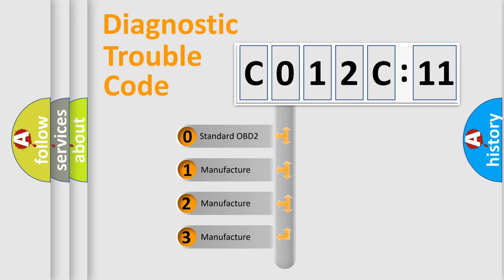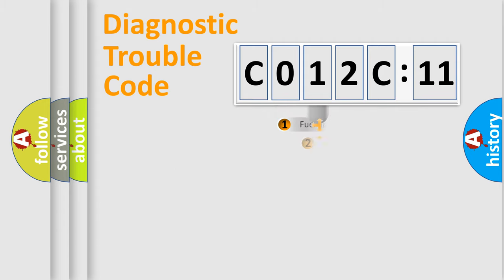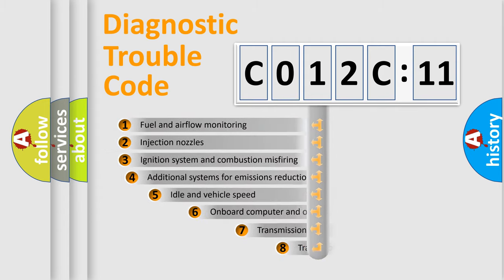If the second character is expressed as zero, it is a standardized error. In the case of numbers 1, 2, or 3, it is a more prestigious expression of the car-specific error.